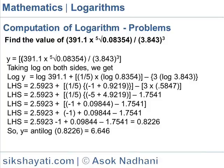So y equals antilog of 0.8226, which equals 6.645, that you get from the antilog table.